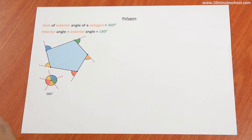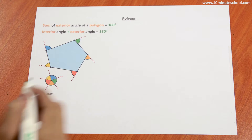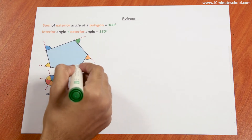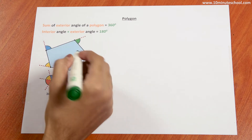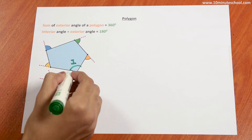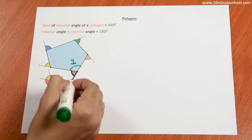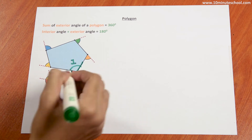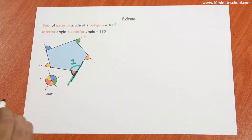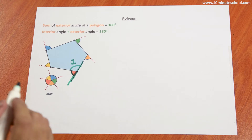Polygon exterior angle related maths. What is an exterior angle? The outer side of a polygon is called the exterior angle. A straight line side of the polygon is called the exterior angle.